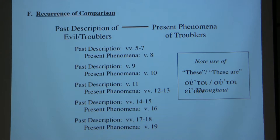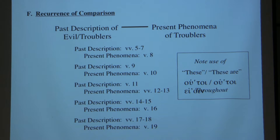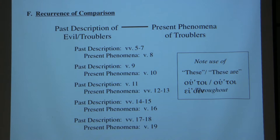You have the past description in verses 5 through 7: 'He who saved a people out of the land of Egypt afterward destroyed those who did not believe, and the angels that did not keep their own position have been kept in eternal chains until the judgment of the great day, just as Sodom and Gomorrah, which serve as an example by undergoing a punishment of eternal fire.' Then: 'yet in like manner these men' — the current people in your midst — 'in their dreamings defile the flesh, reject authority, and revile the glorious ones.' He moves from past description to present phenomena by way of comparison.